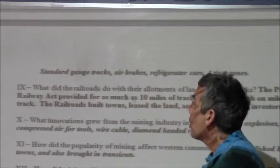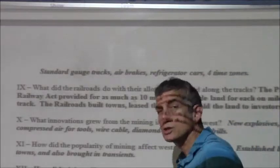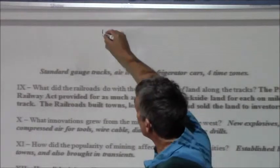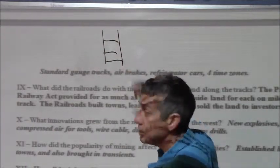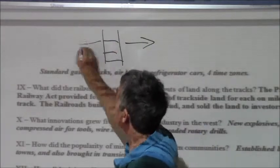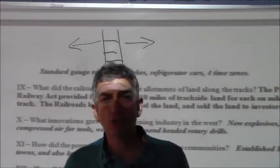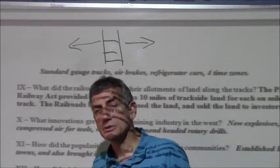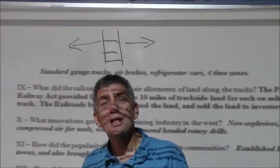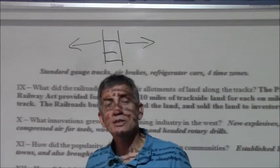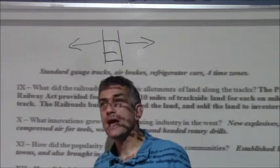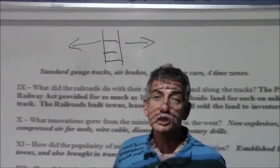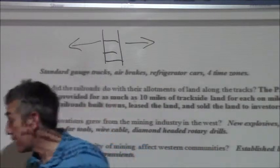What did the railroads do with their land allotment along the tracks? The railroads were given 10 miles on both sides of the tracks — 20 miles of land for every mile they actually built. What would you do? Exactly — they took the land and sold it. They sold it for the development of cities, for general stores, and for holding pens for cattle as people marched their cattle to meet the train to be shipped back east.